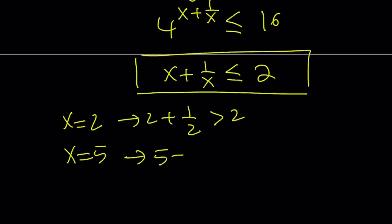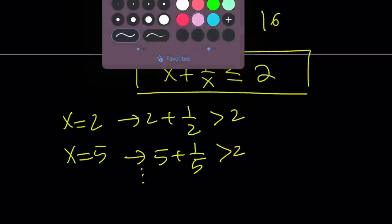If you replace x with 5, you get 5 plus 1 fifth. That's definitely greater than 2, so on and so forth. What happens if you replace x with negative values? But we already said we want x to be positive. So if x is positive, this inequality is not going to work except for one case. And we'll talk about that. But let's go ahead and look at the AM-GM from another perspective.